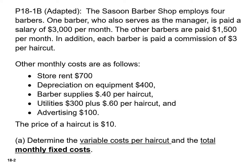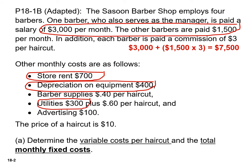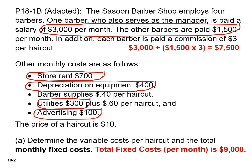The next thing we need to do is determine our monthly fixed cost. We know we have one barber that serves as a manager, and we pay him or her $3,000. We also have three other barbers, so our total salaries will be $7,500. We also want to include our store rent, our depreciation on our equipment, our utilities, as well as advertising. If you add up those costs, our total fixed cost per month is $9,000.